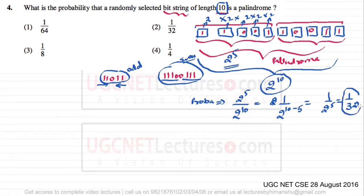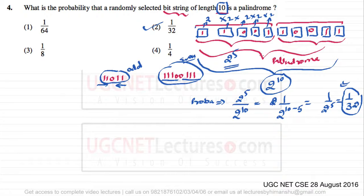So the probability of randomly selecting a palindrome of length 10 is 1/32. The answer is option number two: 1 upon 2^5, which equals 1/32. This question was asked in UGC NET CSE on 28th August 2016.